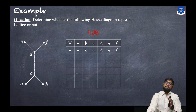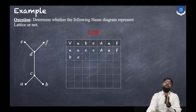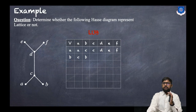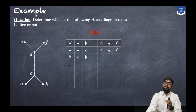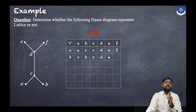For row b: LUB(b, a) = c (same as LUB(a, b)); LUB(b, b) = b; LUB(b, c) = c; LUB(b, d) = d; LUB(b, e) = e; LUB(b, f) = f.